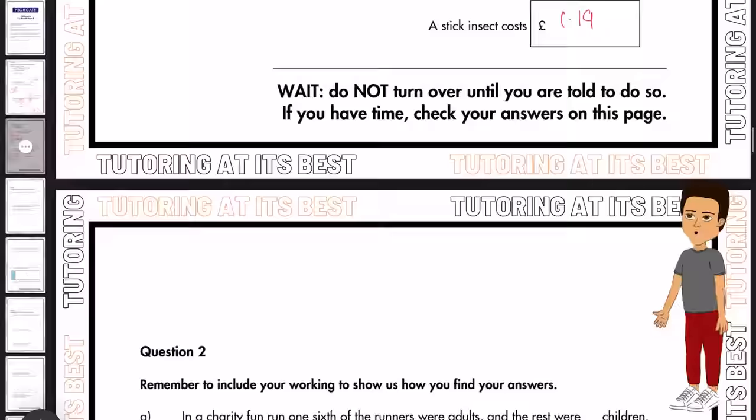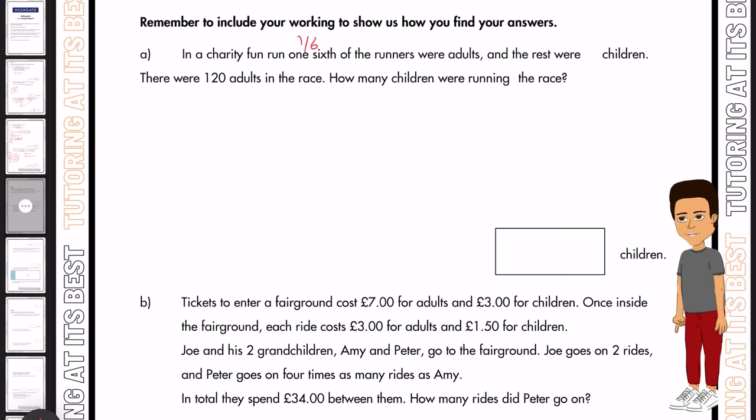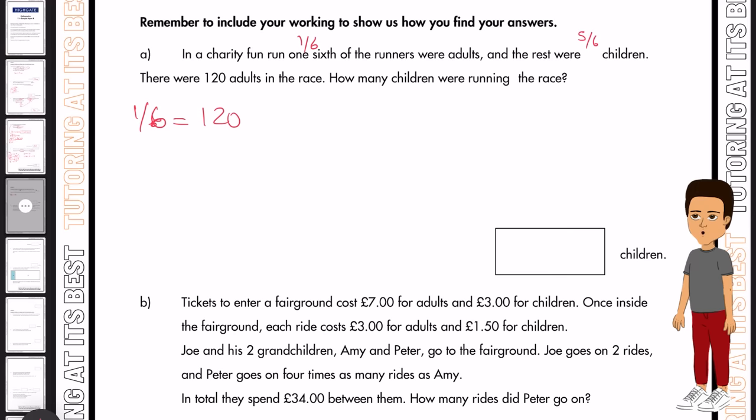Question two. In a charity fun run, one sixth of the runners were adults and the rest were children. So we know that's five over six. There were 120 adults in the race, so you now know one sixth equals 120. So how many children were there? Well, instantly, in order to get five over six, we have to times by five. And 120 times by five will give us 600. And 600 is our answer.